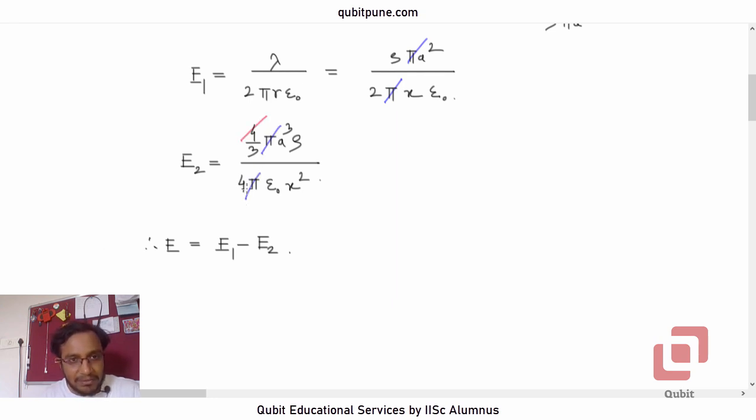E1 minus E2 will be equal to rho A squared by 2x epsilon naught minus E2, which will be rho A cubed by 3 epsilon naught x squared.